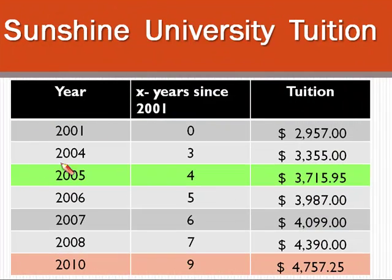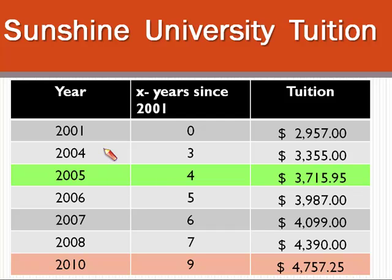I took the liberty of redrawing our table and inserted 2005 to show four years past 2001 — this is our tuition. And in 2010, which was nine years past 2001, this was our tuition. I did highlight 2005 and 2010 just so you realize this is estimated data, not actual data. The information for 2001, 2004, 2006, 2007, and 2008 was actual data supplied by the university. For 2005 and 2010, we used our regression equation to estimate these values.